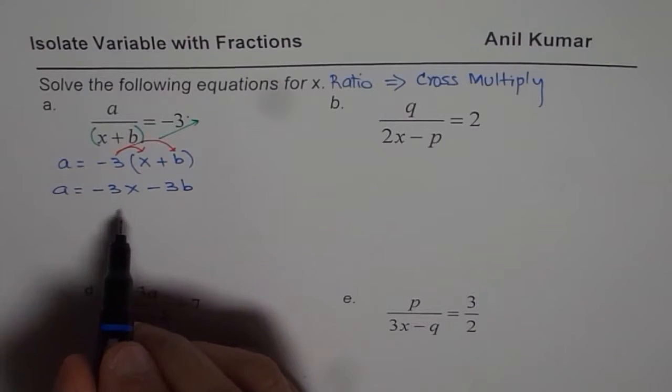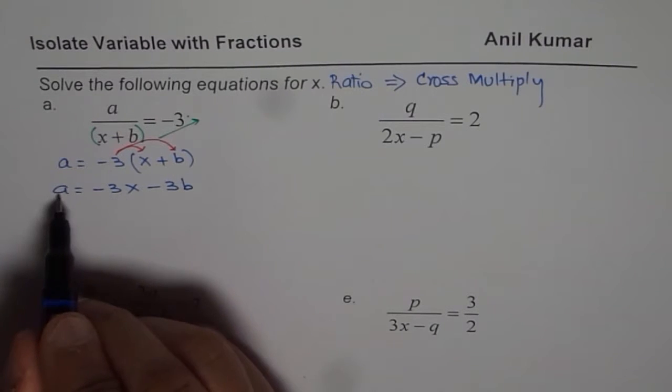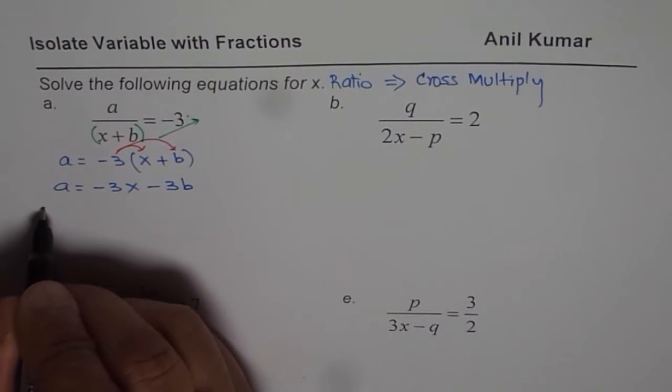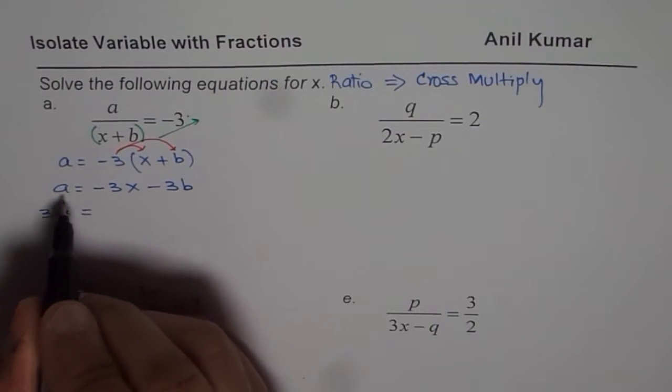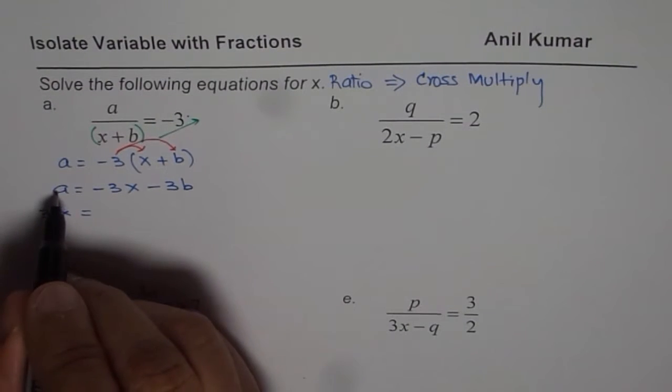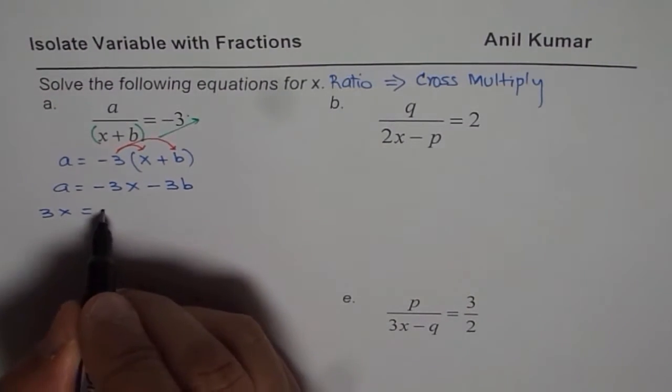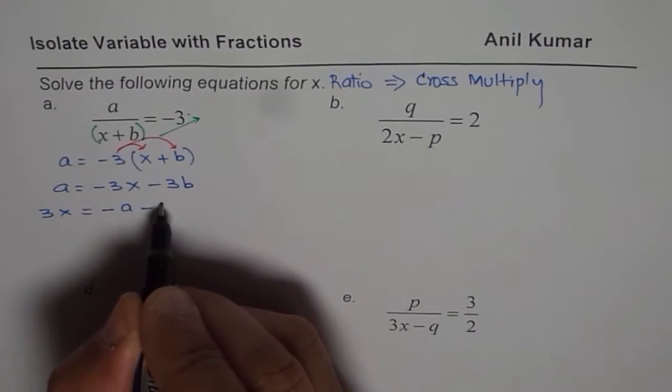So what we can do is, we can bring this minus 3x to the left side so we get 3x. And we can add minus a, so a goes to the right side. So it becomes minus a minus 3b.